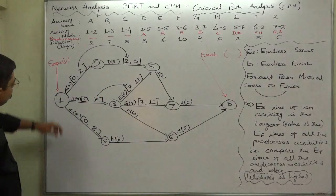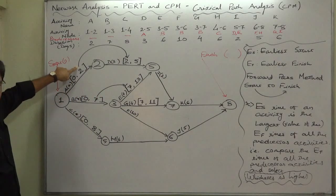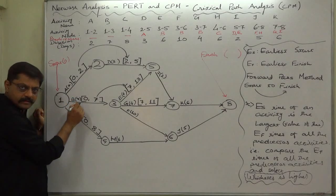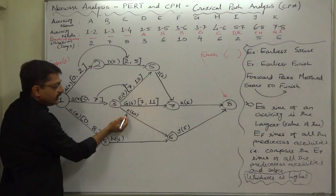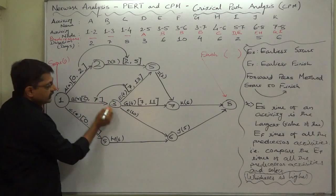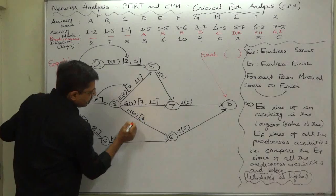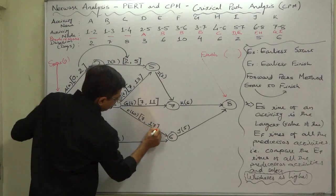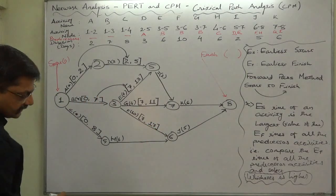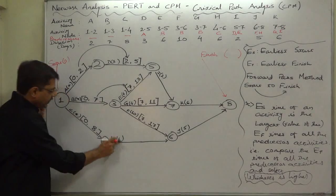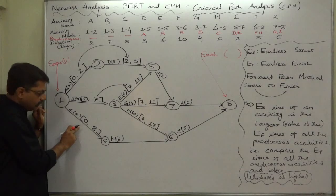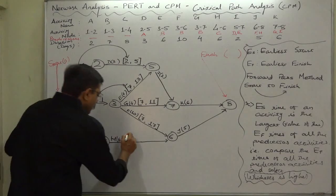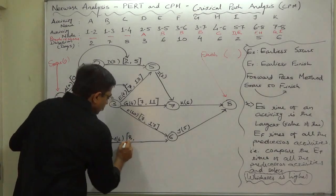In the square bracket, the first value is earliest start time and the second is earliest finish time of the activity. For F also there is only one predecessor, B. When there is only one predecessor, the earliest finish time of the predecessor becomes the earliest start time of the successor. Earliest start time plus duration will be the earliest finish time: 7 plus 10 = 17 for F. In case of H also there is only one predecessor, C. C ends on the 8th day, so earliest start of H is 8 and earliest finish time is 8 plus duration.